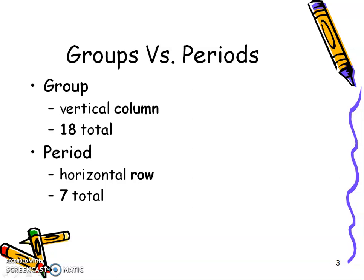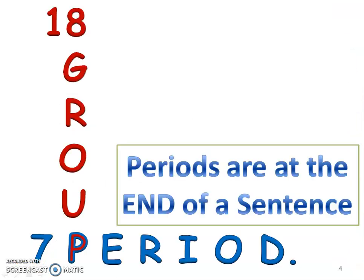You should know by now that groups are those vertical columns and there are 18 total on the periodic table. The periods are horizontal rows and there are 7 total. Remember those bottom two rows really are attached to periods 6 and 7. Groups go down, periods go across. I like to remember that periods are at the end of a sentence — you read sentences left to right, so the periods are at the end of a row.